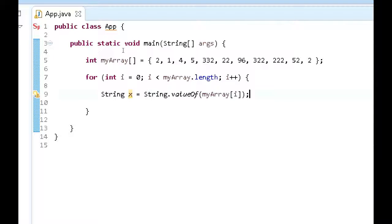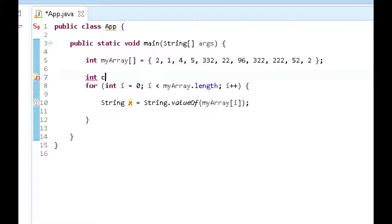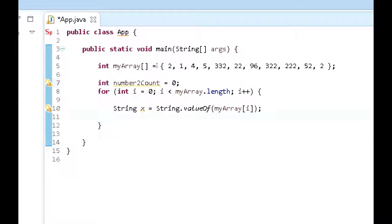Now one thing that I forgot to do was to just add an int up here. Let's just say numberTwoCount, and set this equal to zero. So we just want to use this variable here so we'll be able to keep track of the number of twos that are counted.